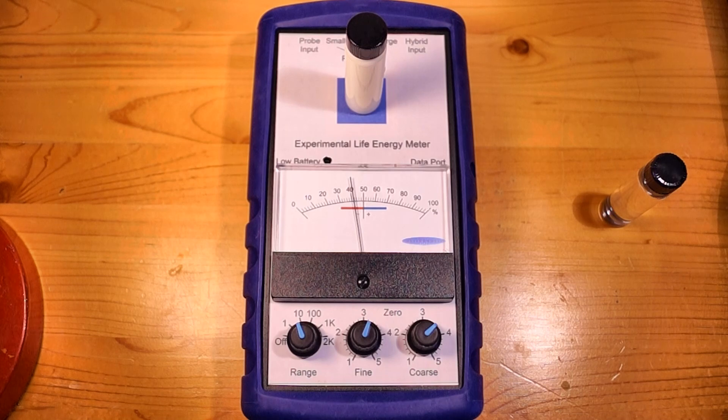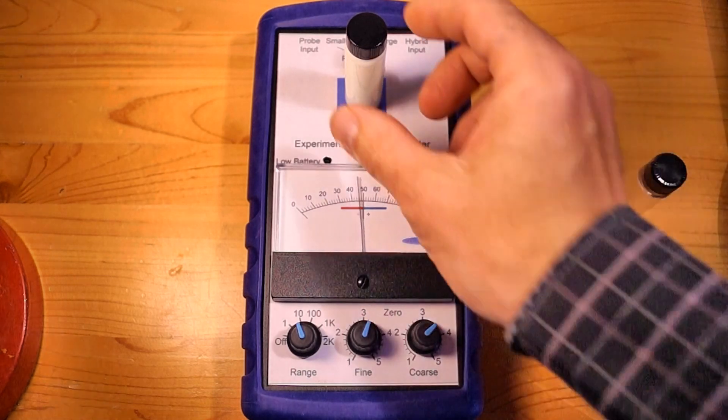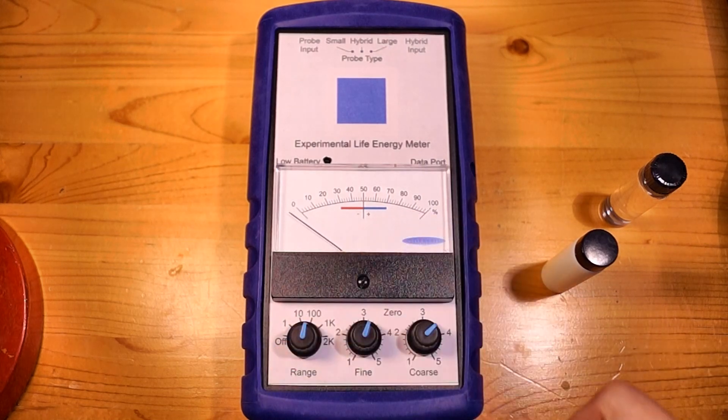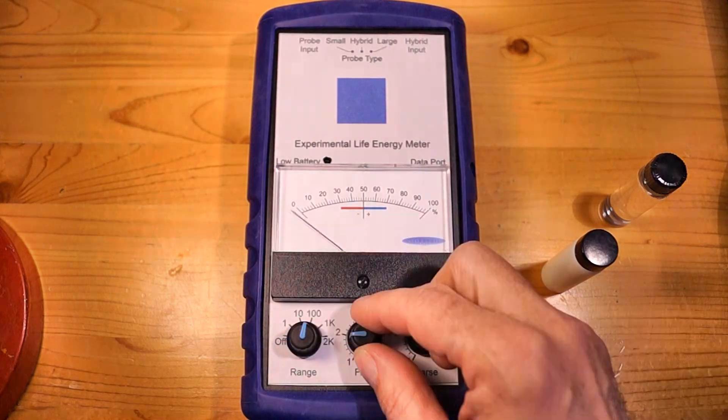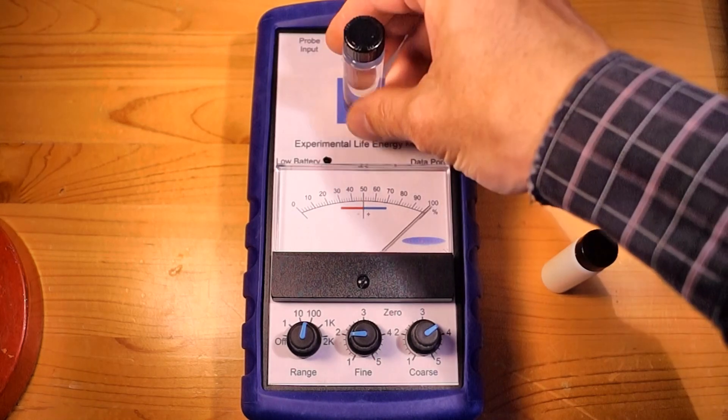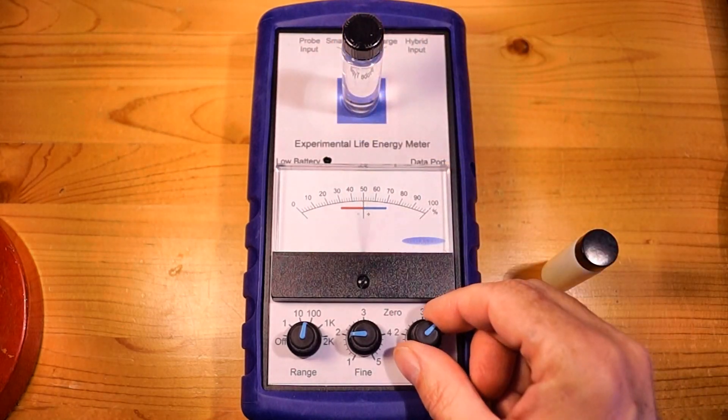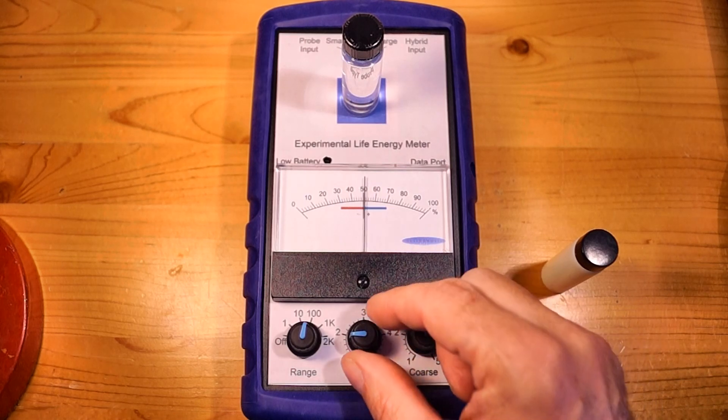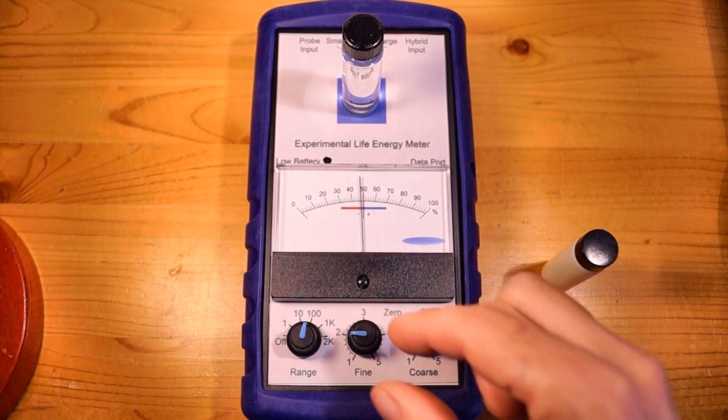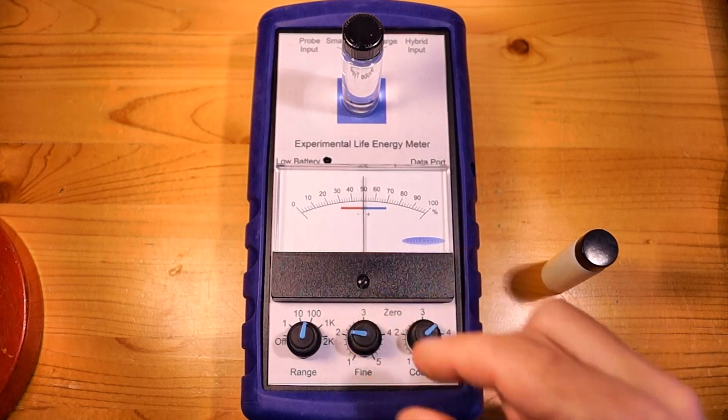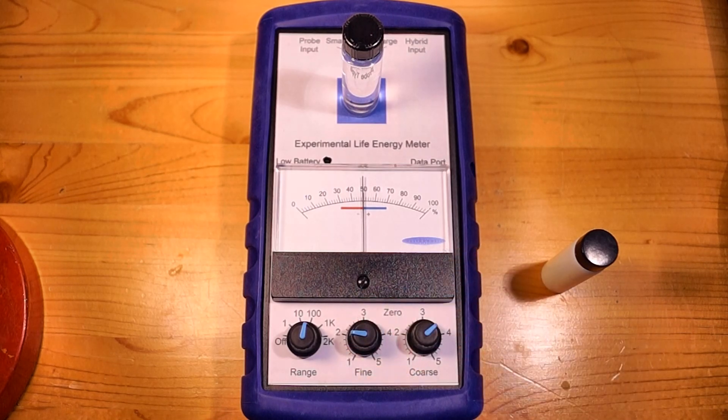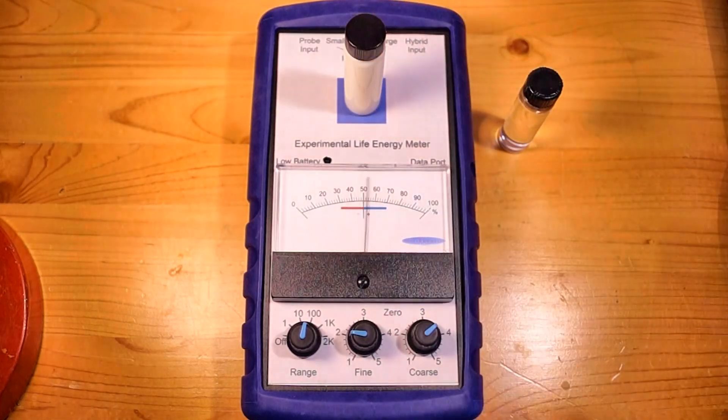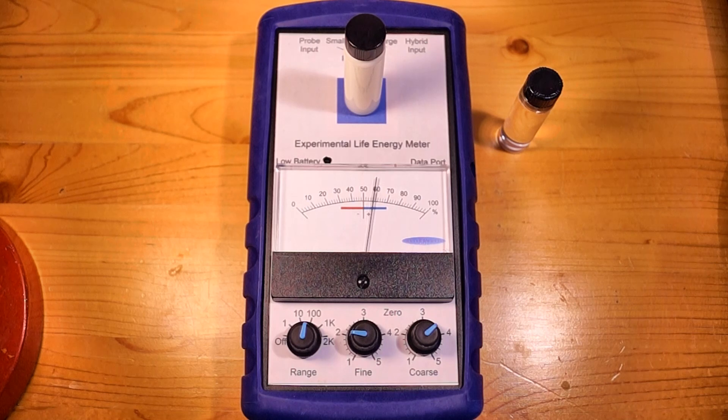Now to see the difference more clearly, we can use what we call the relative method. So in the relative method, what we do is we'll increase the range to 100. We're going to put the water sample first, and we're going to adjust it now for let's say 50%. Make sure that the energy field of the body is away from the needle after you make the adjustment. Now, we're going to put the milk sample there.